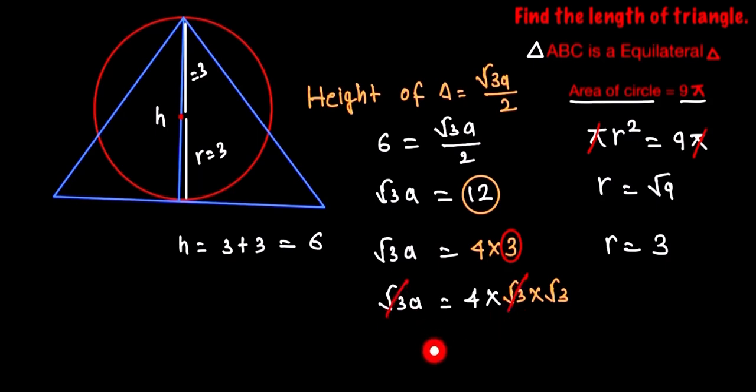So a is equal to 4√3, and this is the length of the triangle, and this is our final answer. Thank you so much for watching my video. If you like the video, then subscribe to our channel and share it with your friends.